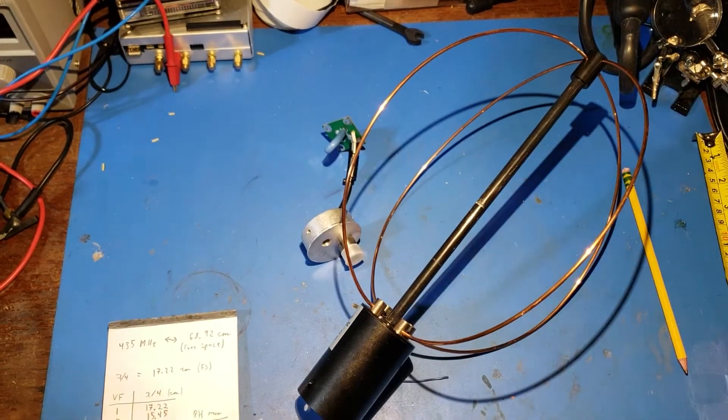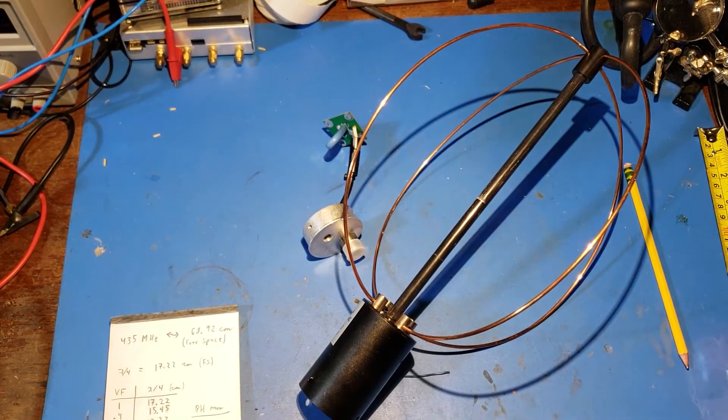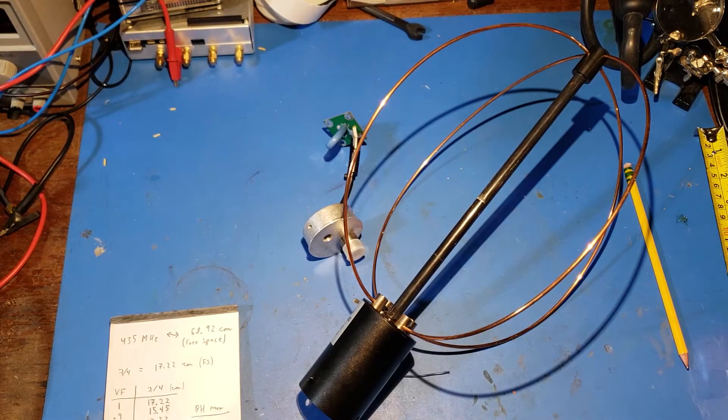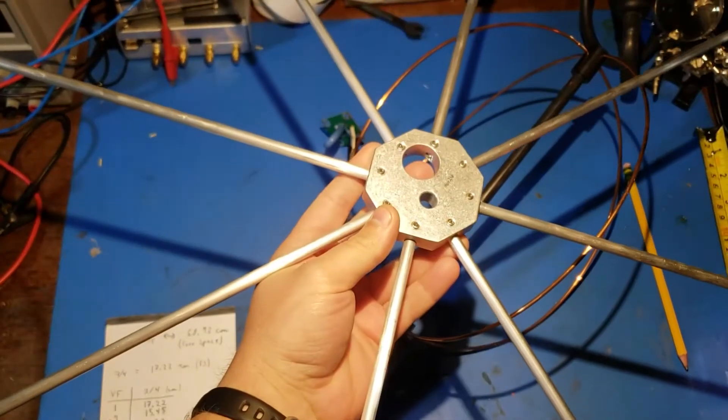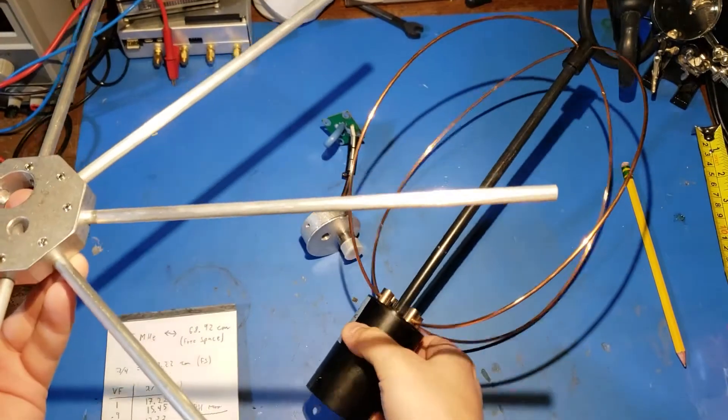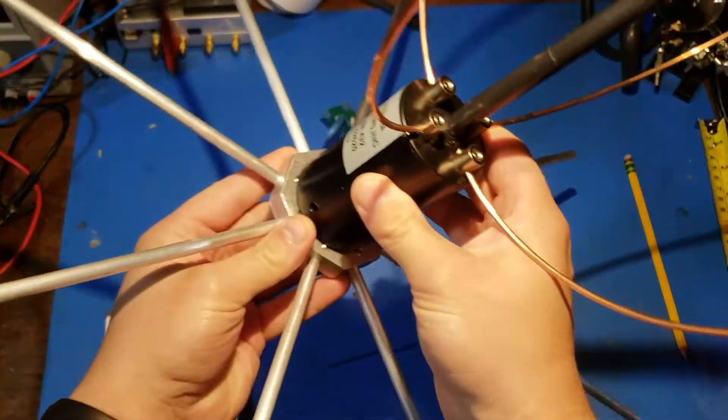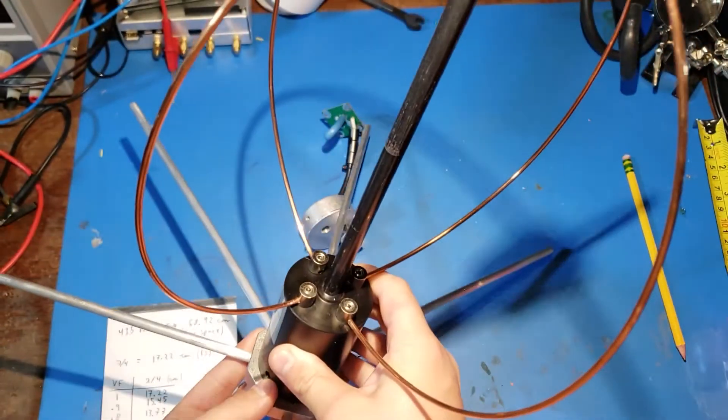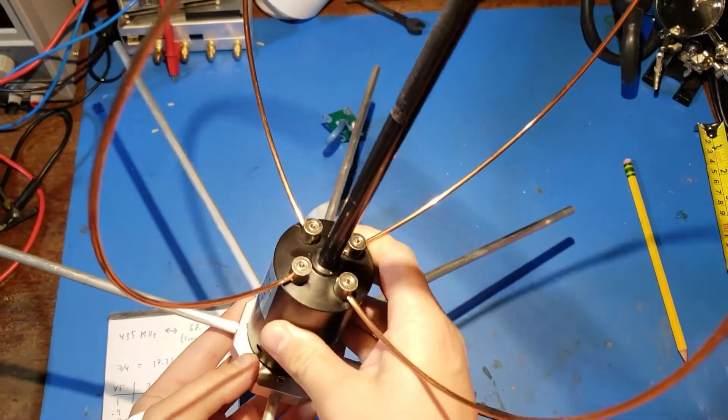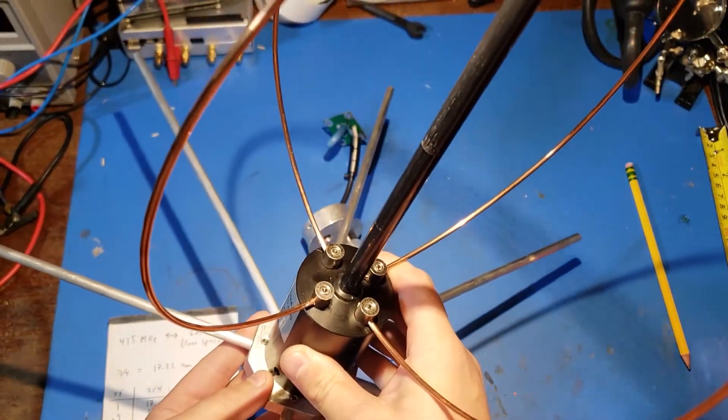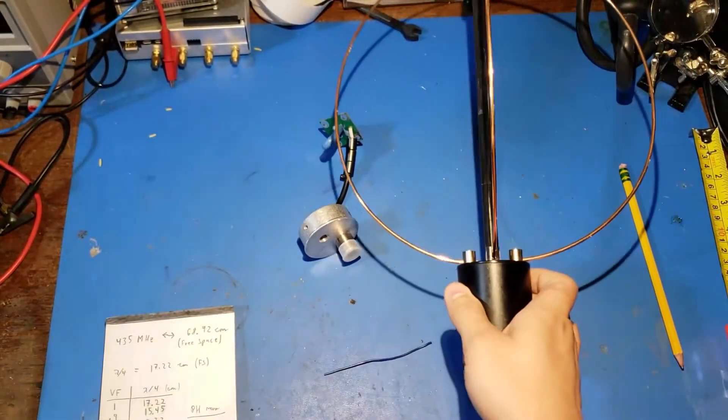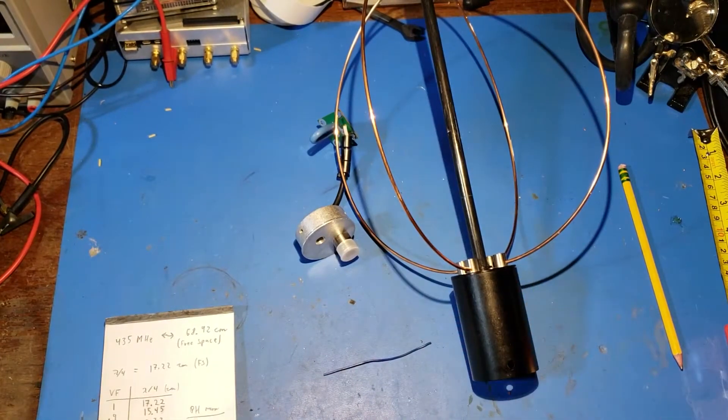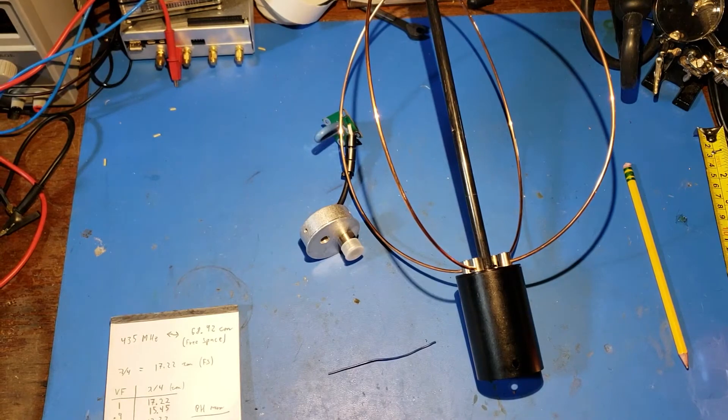This antenna is often used in conjunction with a reflector, except that this reflector serves the opposite purpose of the reflector used in the eggbeater V2 antenna. This reflector is placed very close to the feed point, and the result is a clean bubble of radiation pattern without deep sporadic nulls that's focused upwards of 20 degrees. This results in very good performance for high satellite passes above 20 degrees.